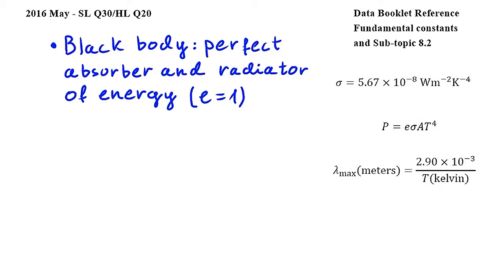In this question, we have to decide which of the three given statements are true about a black body. To start, I wrote down a brief definition of what a black body is. Well, it is a perfect absorber and radiator of energy. In other words, its emissivity is 1, so E is equal to 1.